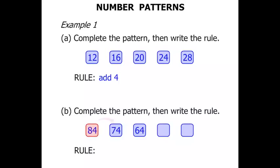So from 84 to go down to 74 we subtract 10. From 74 going down to 64 again we subtract 10. So let's keep on subtracting 10. So 64 to get to the next number we subtract 10, and 64 minus 10 is 54. From 54 we're going to subtract 10 so we get 44.